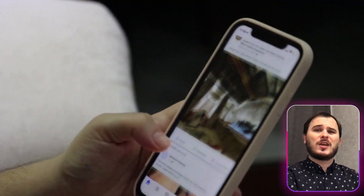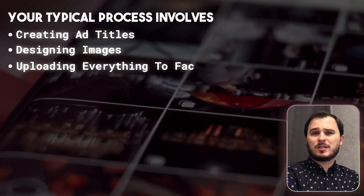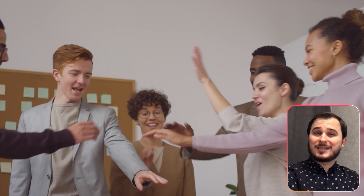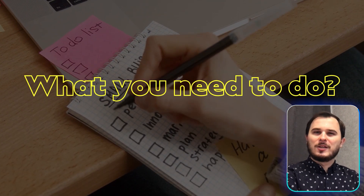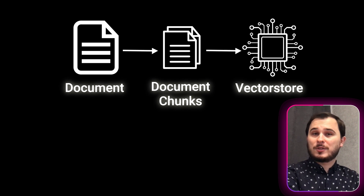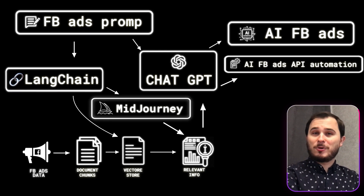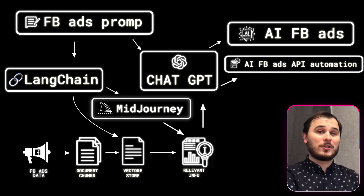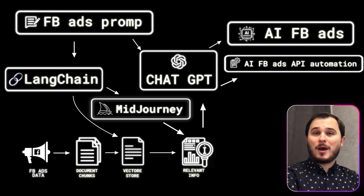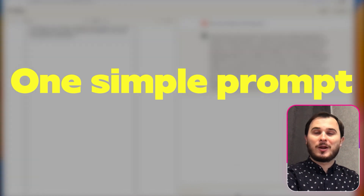Picture this: you run a marketing agency and manage Facebook ads for your clients. Your typical process involves creating ad titles, designing images, uploading everything to Facebook, testing the ads, and tracking the best results. But what if you could leverage all your accumulated knowledge from successful and unsuccessful campaigns to create an ad with just one click and one simple prompt? Convert your data into vector format, then use Langchain AI to communicate with your vector database. Integrate with Midjourney or StableDiffusion for image creation, and add ChatGPT for your queries. By combining all these tools, your output would be a complete Facebook campaign from scratch with just one simple prompt, ready for real-world testing.